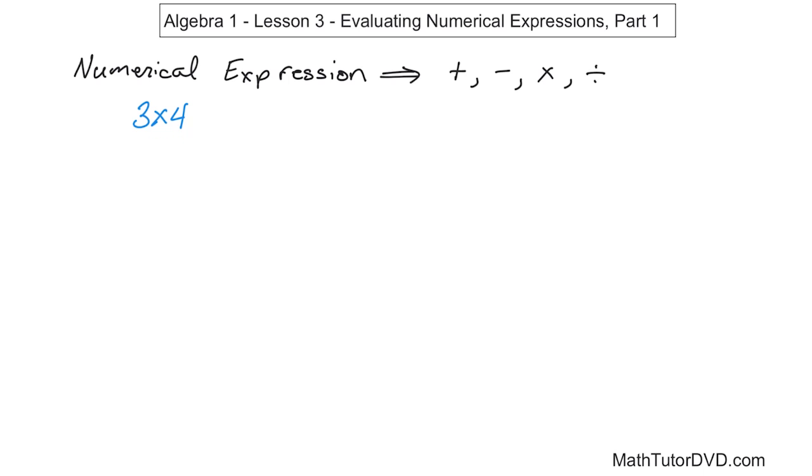So we never use this x to mean multiplication. Instead in algebra, we put 3 and then a dot here with a 4. That means 3 times 4. Or you could write it as 3 parentheses 4 parentheses. And that is going to also mean multiplication when you have the parentheses set up that way.